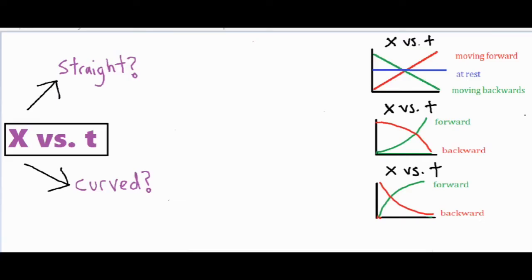The first major question you want to answer is: is the graph straight or is it curved? If it's straight that means it has a constant slope, so the rate at which its position is changing per time is remaining constant, which means it's moving at a constant velocity.